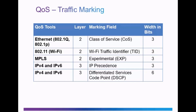Looking closer at QoS traffic marking, we can see that traffic marking happens at both Layer 2 and Layer 3. At Layer 2, we have Class of Service, or CoS, which uses the 802.1Q VLAN tagging and 802.1p quality of service protocols. Layer 2 traffic marking happens on the local area network and is limited to the LAN using Layer 2 switches. Under Wi-Fi, traffic marking happens with the Wi-Fi Traffic Identifier field, or TID. With MPLS, you have the Experimental, or EXP, field, also at Layer 2.